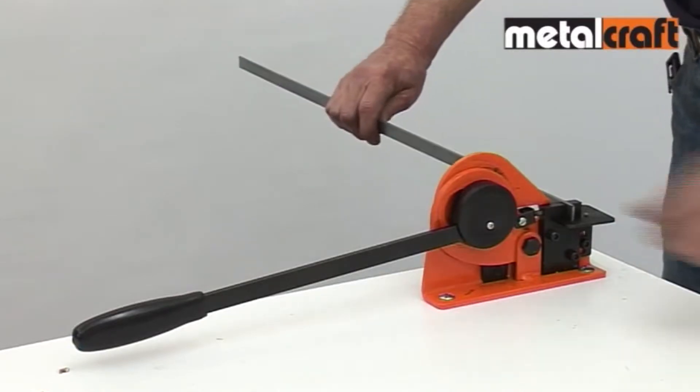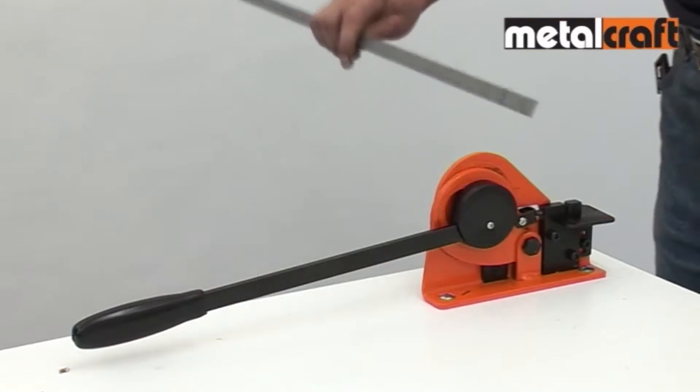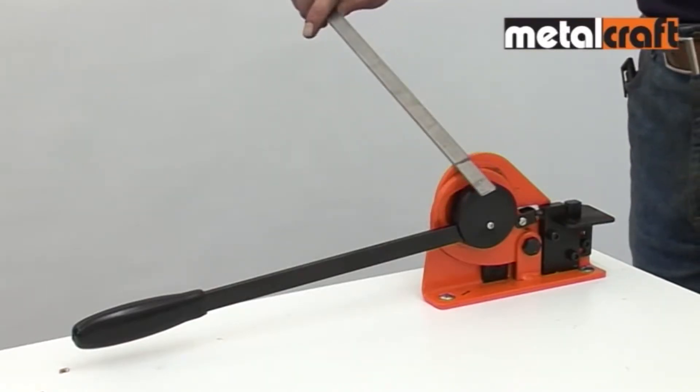To protect the punch pin from damage, always support the weight of the steel strip and fully retract the handle before taking the strip out of the punch block.